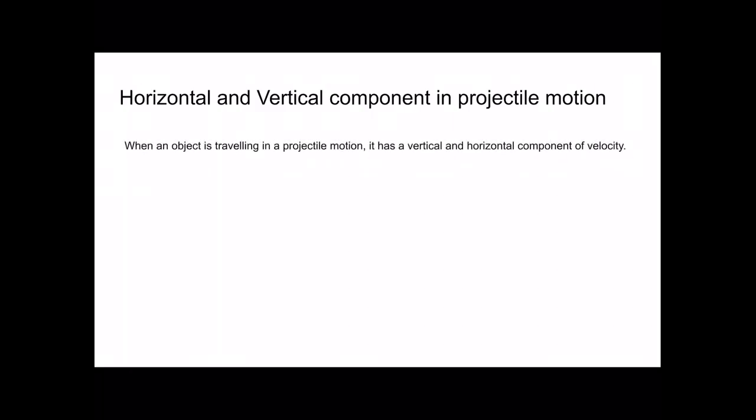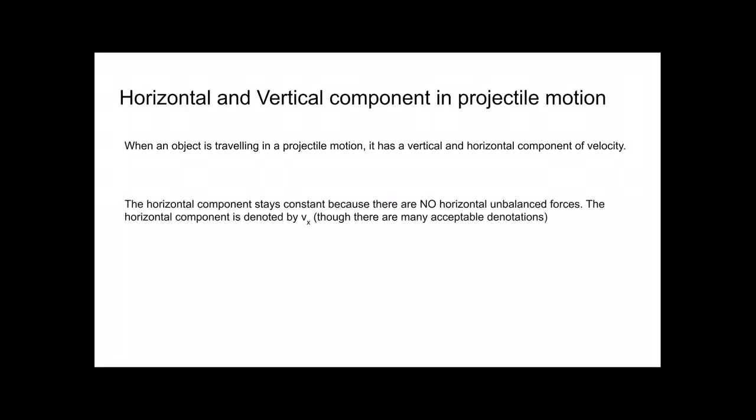How does this apply in projectile motion? When an object is travelling in projectile motion, it has a vertical and horizontal component of velocity. When you kick a ball at an angle, it has an instantaneous velocity at that angle. That instantaneous velocity is made up of the vertical component and the horizontal component.